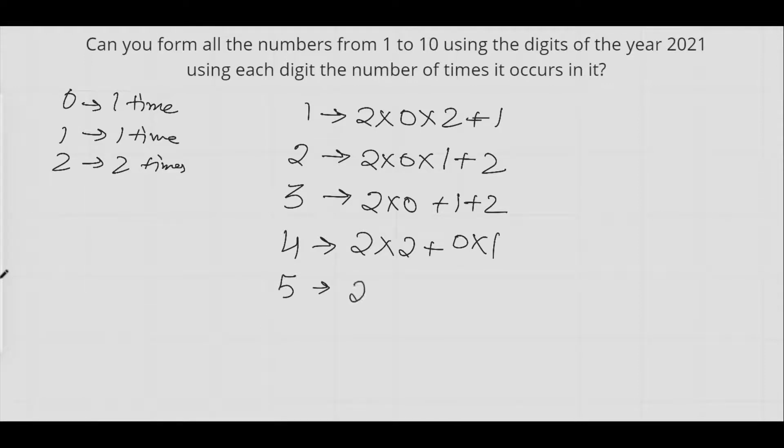Five is simply the sum of all the digits. For six, we can do 2+0×2+1.